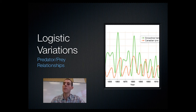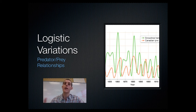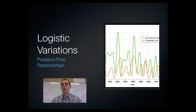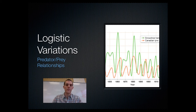Usually the prey population is the one that drives the growth and decline of the predator population, because you need to have the food source first before the predator population can grow. Growth in the hare population, then growth in the predator population. Decline in the prey population, decline in the predator population.